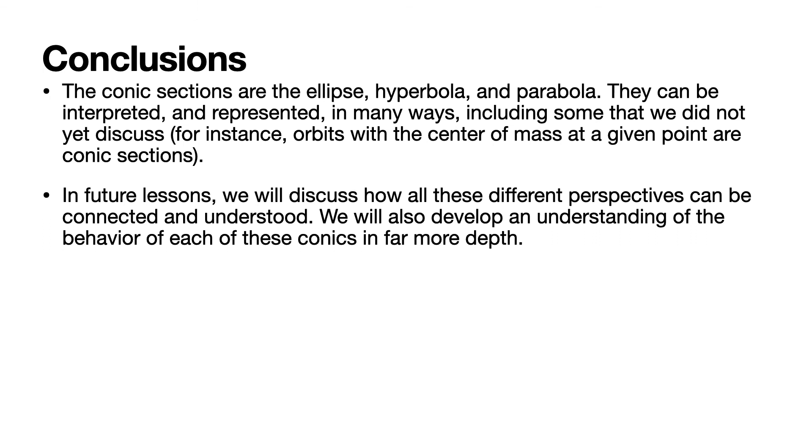So the conic sections are the ellipse, hyperbola, and parabola. They can be interpreted and represented in many ways, including some that we didn't even discuss. For example, orbits with a center of mass at a given point are conic sections. So if you think of a planet going around a sun, that's an ellipse.